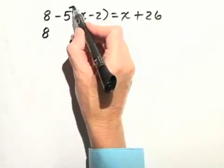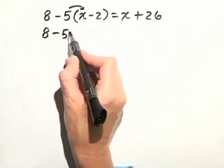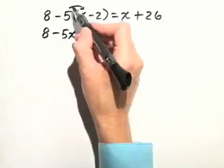Now let's distribute the negative 5 through the parentheses. And we have negative 5 times x, which is just negative 5x.